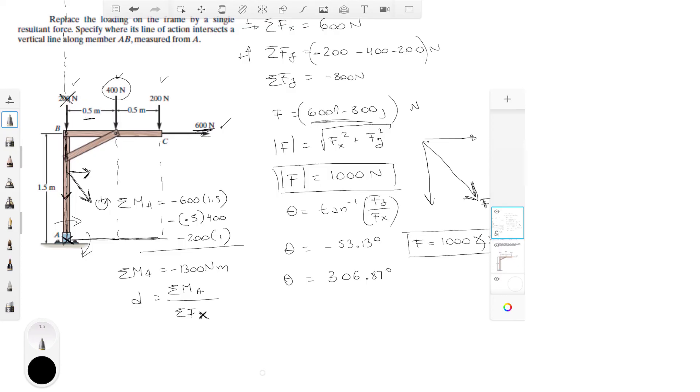The X component is 600 so you have to divide it by 600. You don't have to divide it by the magnitude of the whole force. That's important to understand. So d is equal to 1300 over 600.